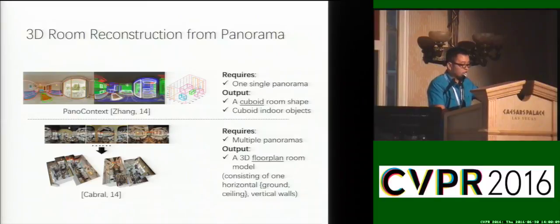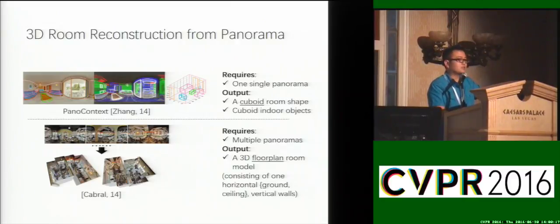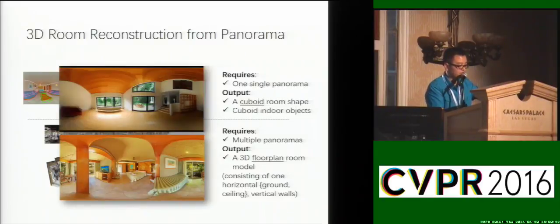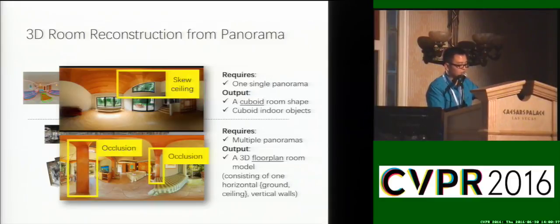In the field of 3D reconstruction from panorama, PanoContext takes one single panorama as input and can predict a cuboid room shape with the objects inside. While Cable's method takes multiple panoramas as input and outputs a floor plan model. However, room shapes can be complex — the ceiling may not be horizontal, and there may even be occlusions in the panorama. As far as we know, these issues are not yet addressed by existing methods.